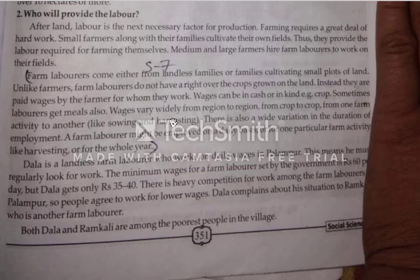Wages are different — they vary widely from region to region, crop to crop, and place to place. For example, the charges for sowing — beach bona — and harvesting are different. Sowing is also called boai.